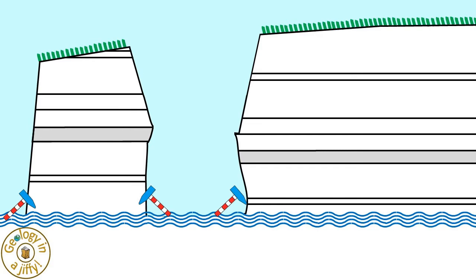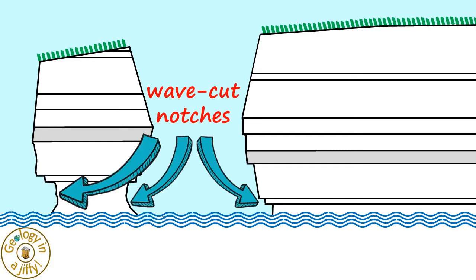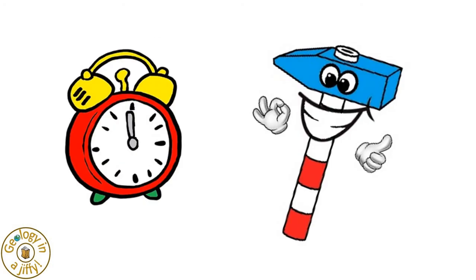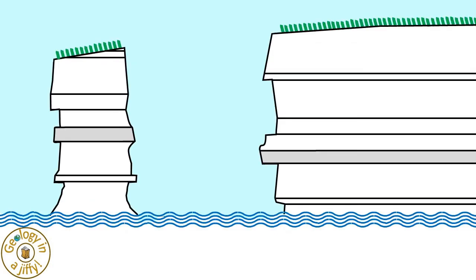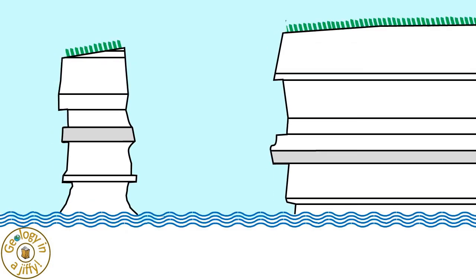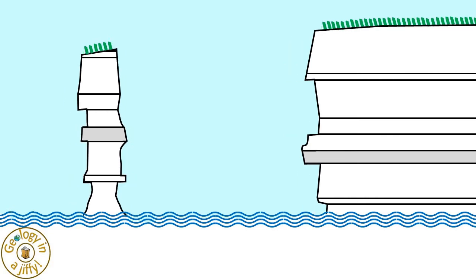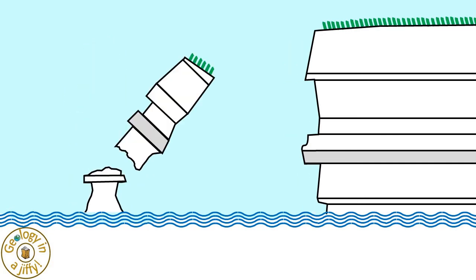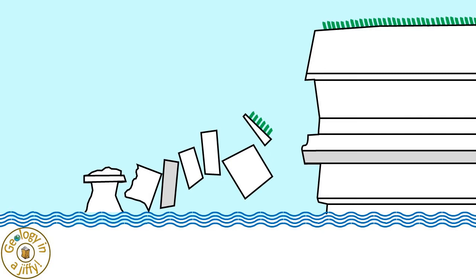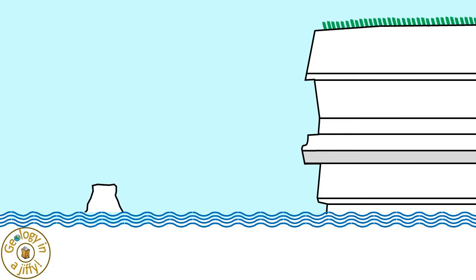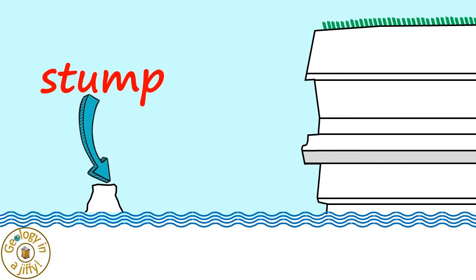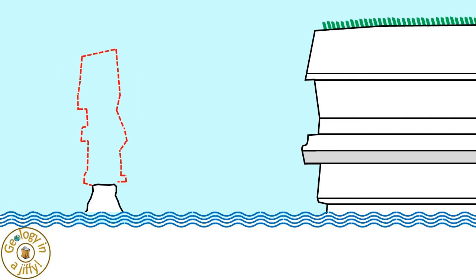The eroding waves continue their onslaught of the cliffs, forming wave-cut notches, which over time force the cliff to retreat further landward, but also cause the base of the stack to narrow, with the upper sections falling into the sea, until in the end the whole stack topples into the sea — gone forever — leaving only a stump as a reminder of where the stack once stood.